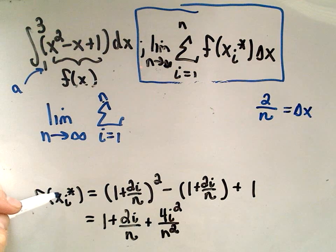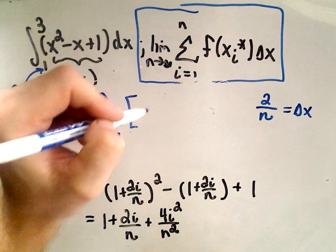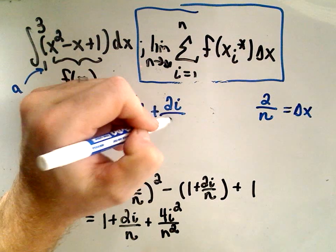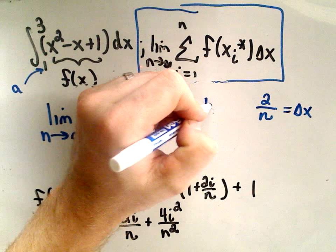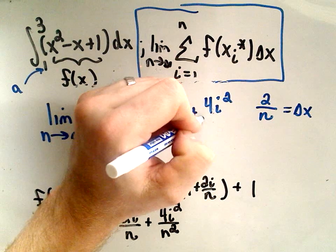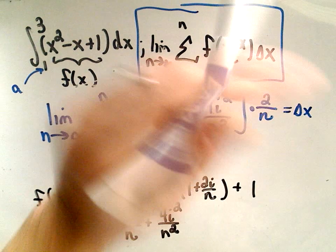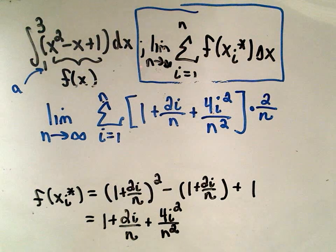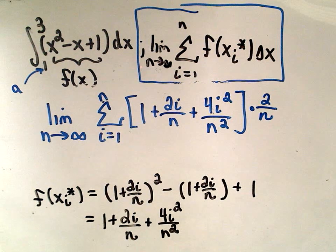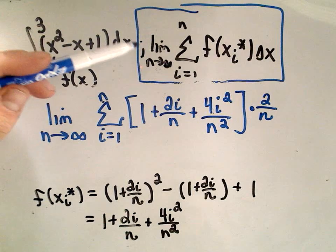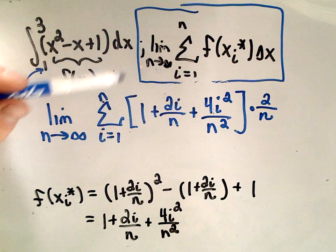When we plug in our f of x sub i star, we're going to be calculating the summation of this 1 plus 2i over n plus 4i squared over n squared. And we have to multiply all of that by delta x, which is 2 over n.